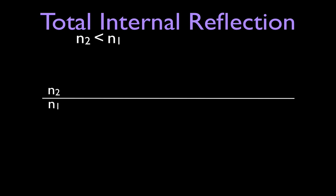We have two materials. The upper material is represented with an index of refraction of N2. The lower material on the other side of this boundary has an index of refraction of N1, and our light ray is going to be traveling up from the bottom. N2, the material on the other side, has a lower index of refraction, so we know we can have total internal reflection if we reach the correct angle of incidence.